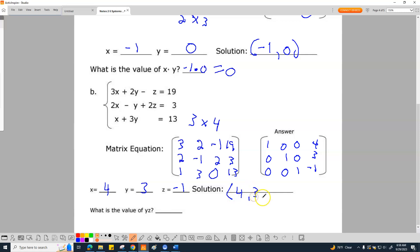And yes, in Calculus 3, you do graph in three dimensions. What is the value of y times z? In this case, it is negative 3. We're just multiplying y times z. Okay, that's it.